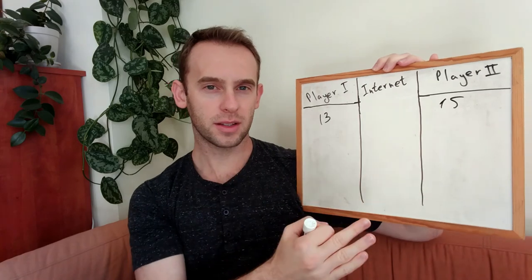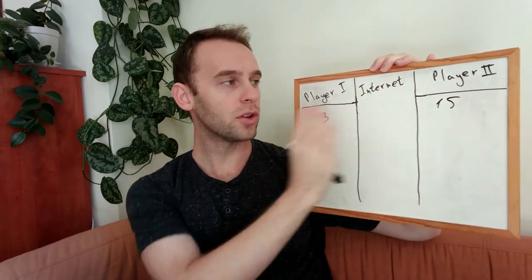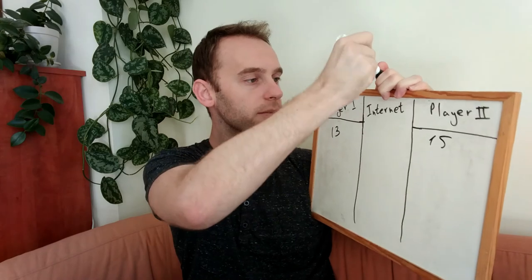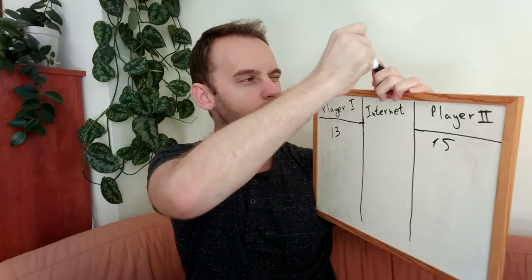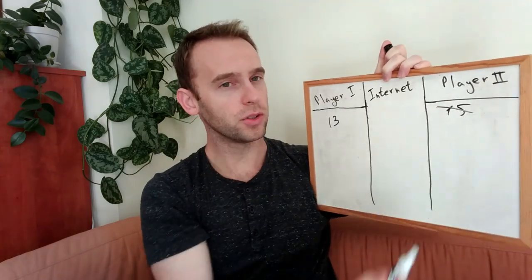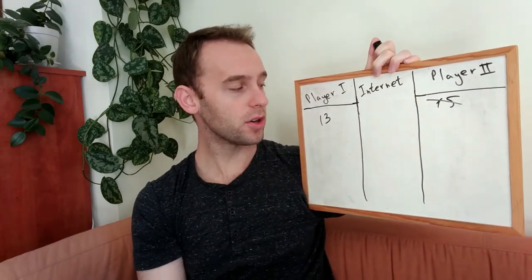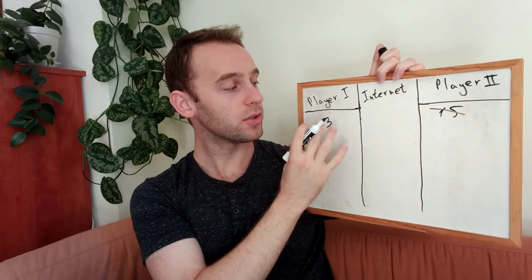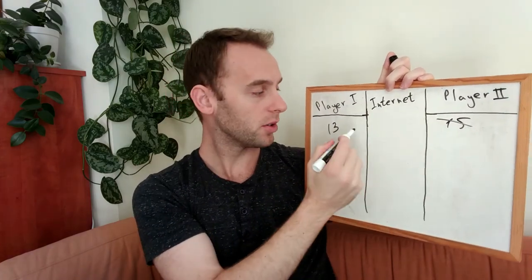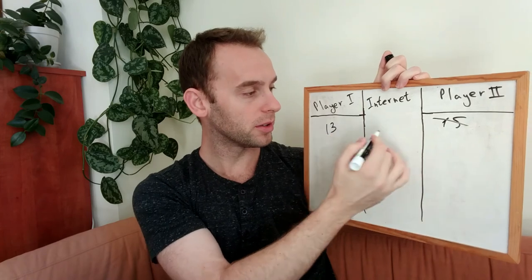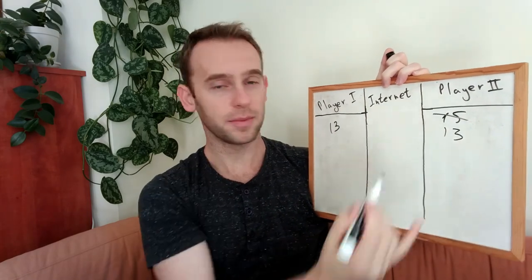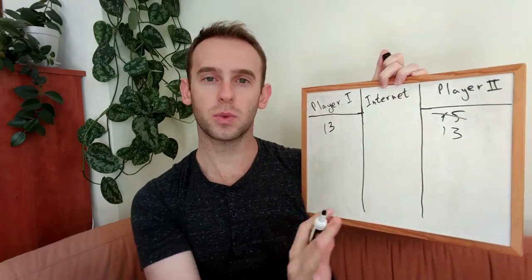For this example and for this video I will ignore the score of the second player — I don't care what his score is. All I want to do is transmit the first player's score to the second player. I want to be able to write here: 13. That's what I want to do.